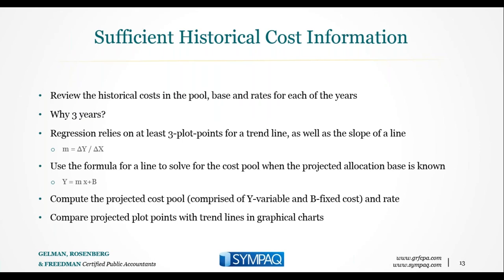Getting into the algebra: when you start, take a focused look at your historical rates, your cost pool, base, and the rate outcomes over the years. We're going to focus on the SG&A rate. We need three years as a minimum for plot points to get a trend line — the slope of a line is the change in Y over the change in X. The formula for fixed variable cost where the projected allocation base is known is Y = MX + B. When we project the cost pool, it'll be comprised of Y variable plus B fixed cost.